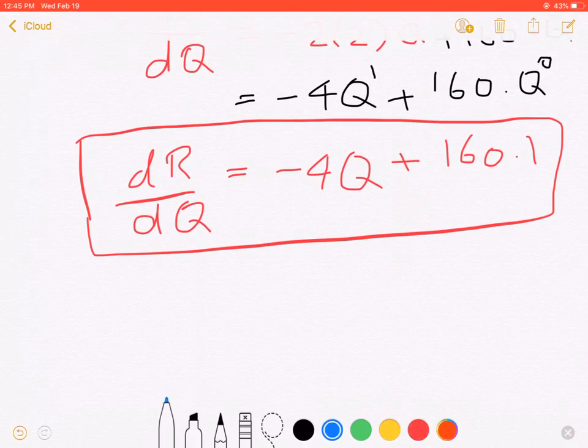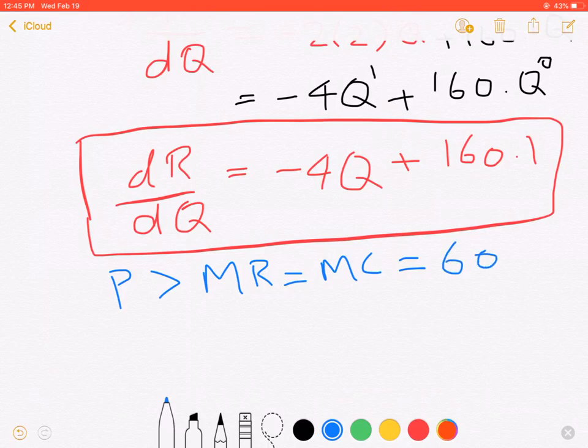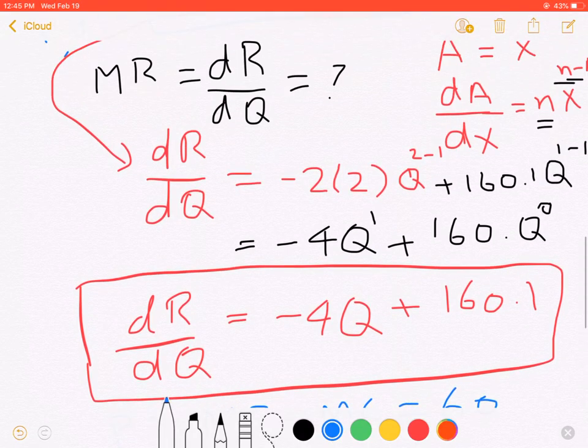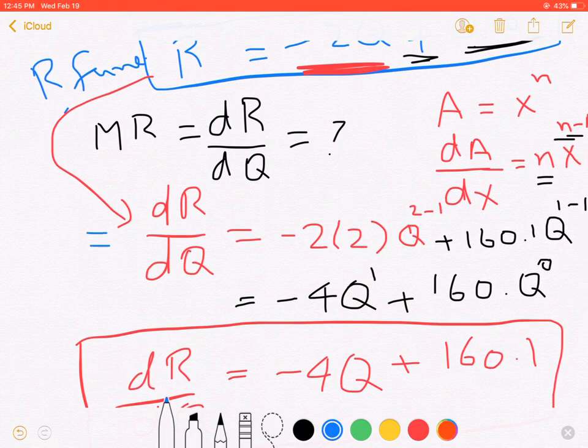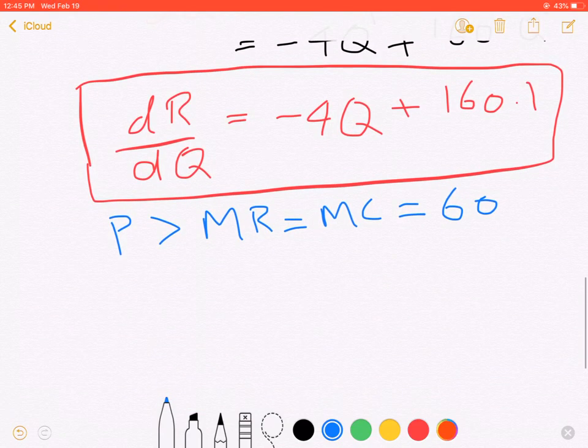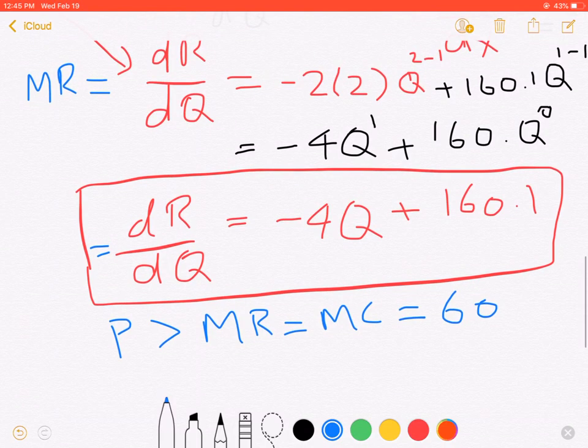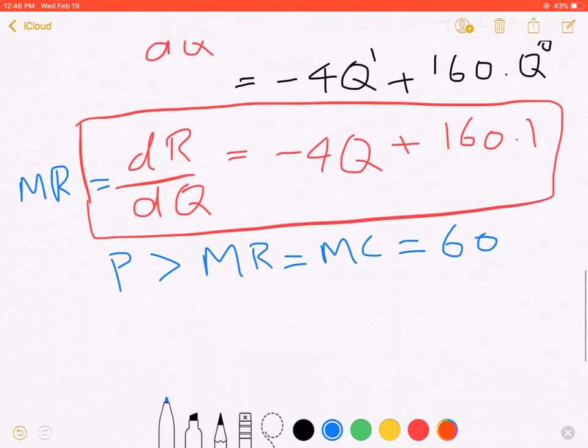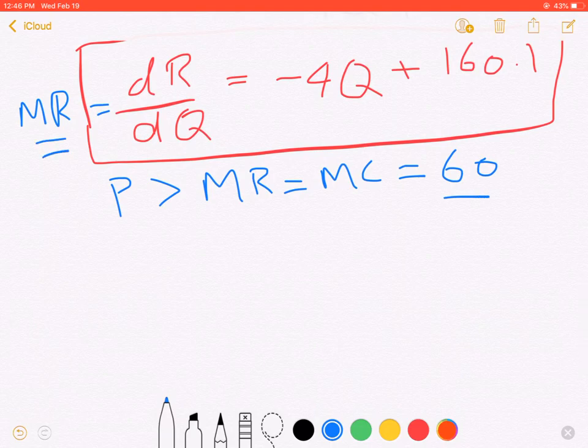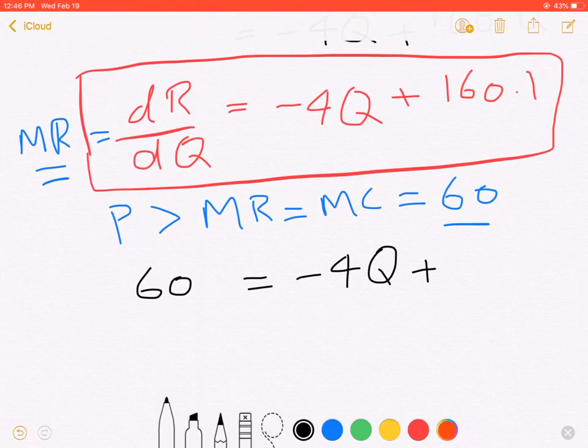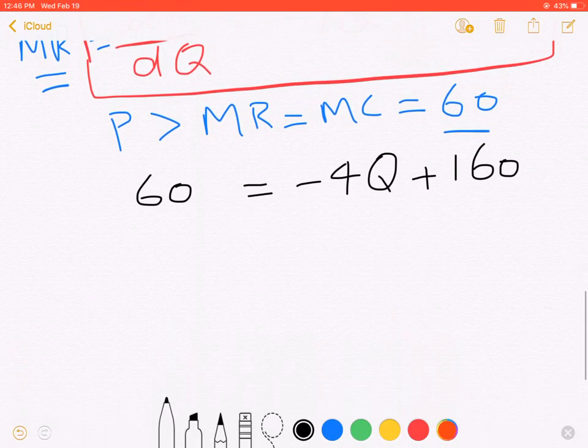Now if you recall from your textbook, for the profit maximization, P should be greater than the marginal revenue which is equal to the marginal cost. And this is given you in your question statement which is 60. And what we just found out, the derivative here, this equals my marginal revenue. So this equals my marginal revenue. So I can say that my marginal revenue is 60. My marginal revenue is 60 which equals -4Q + 160. Now from this equation you just need to find out the value of Q.